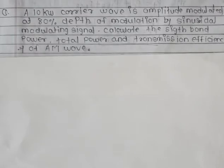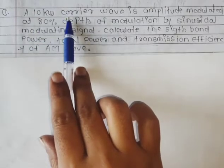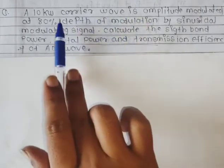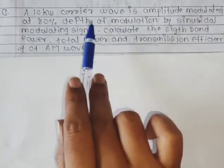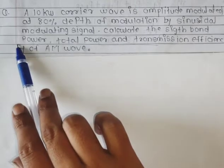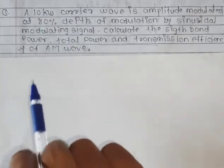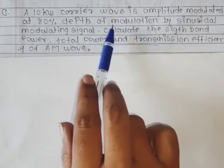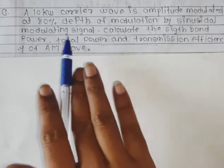Hello students, today we see a problem which is based on amplitude modulation power. The problem is: a 10 kilowatt carrier wave is amplitude modulated at 80 percent depth of modulation by a sinusoidal modulation signal. This problem depends on the formulas and derivations we saw in the previous lecture.